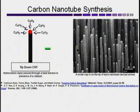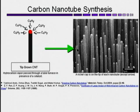The catalyst is lifted up as the tube grows. In the picture, you can see where one of the metal spheres has fallen off. Placing the catalyst in specific locations can control where the carbon nanotubes are grown.